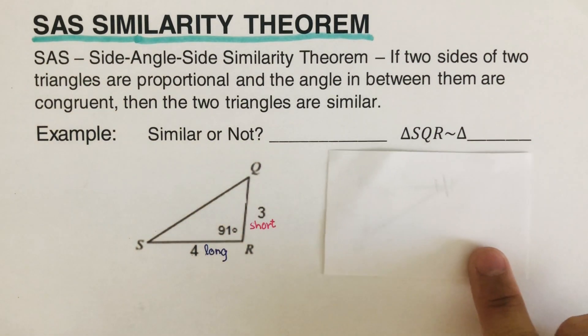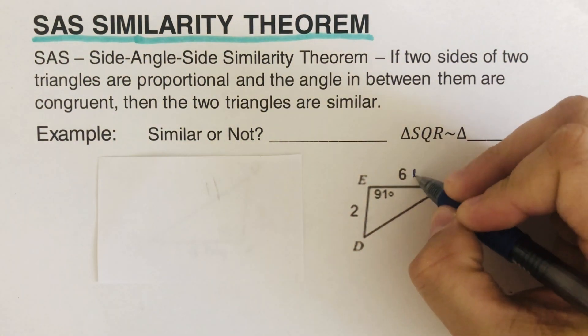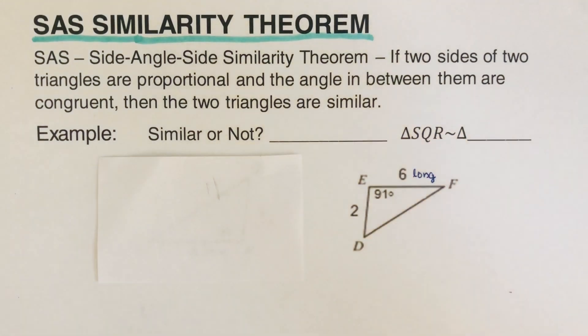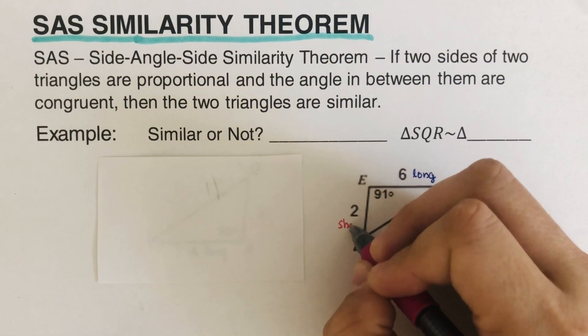And then we will do the same thing across. So let's find what is the long. The long side is 6. And then the short side is 2. So I label them long and short.